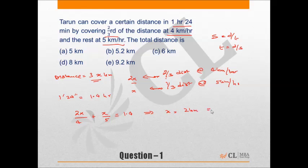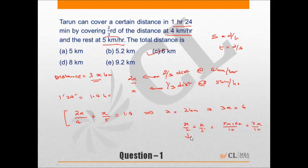The total distance is 3x, which equals 6 kilometers. The correct answer is choice C. Note that some may use fractions: 2x/4 + x/5 = 1.4, giving 5x + 2x = 7x/10, equivalent to 70% = 1.4, so 100% = 2. Both fraction and percentage methods give the same answer. Use whichever you are most comfortable with.